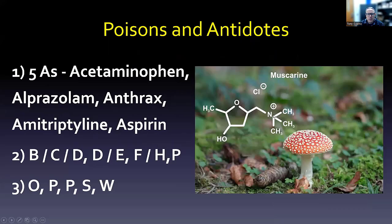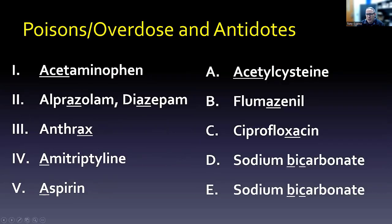I put them in alphabetical order first. I took a number of poisons or drugs that you can overdose on, and five of them happened to start with A, then a couple started with B, C, D, then E, then H, and then I finished up with O, P, P, S, and W. When we talk about these poisons and antidotes, it's really about keeping them straight in your head and making a small connection to help you remember which poison ends up with which antidote.